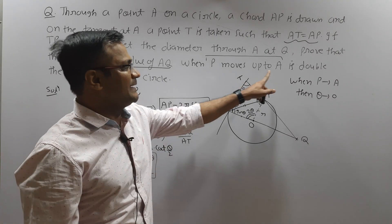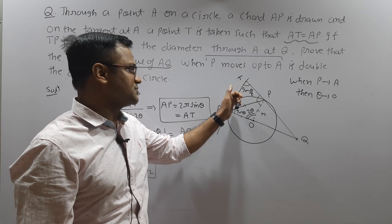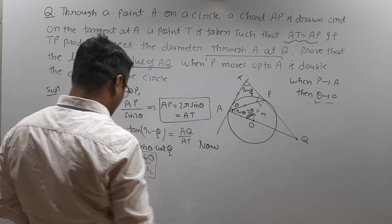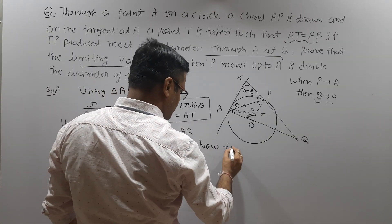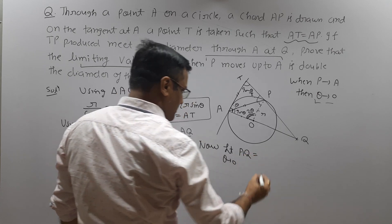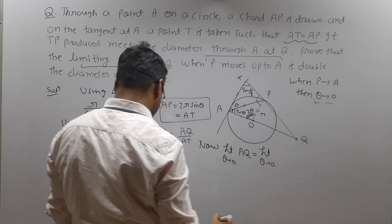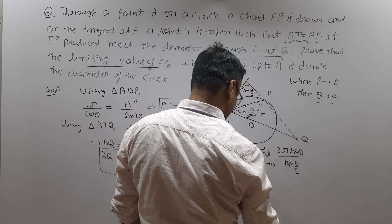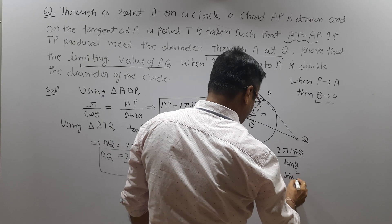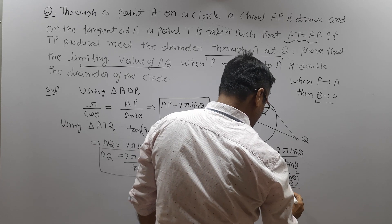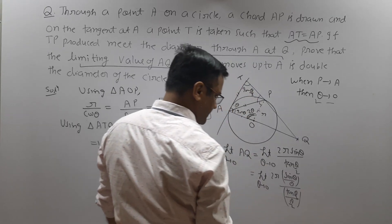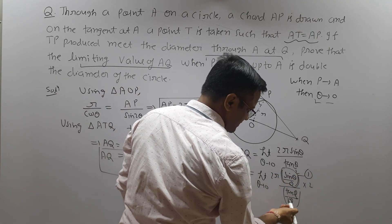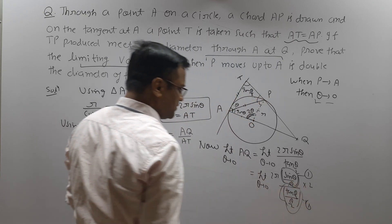Now we have to apply the limiting condition. When P approaches towards A, moving along the circle, the central angle θ decreases and tends towards zero. The limiting value of AQ as θ → 0 is: limit θ→0 of 2R sin θ / tan(θ/2), which can be rewritten as limit θ→0 of 2R × (sin θ / θ) / (tan(θ/2) / (θ/2)) × 2. These are both standard limits: sin θ / θ = 1 and tan(θ/2) / (θ/2) = 1. So the result is 2R × 2 = 4R.